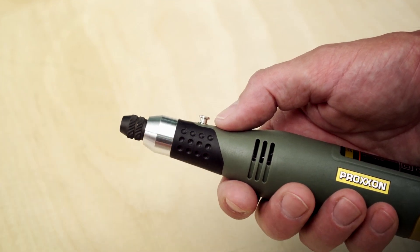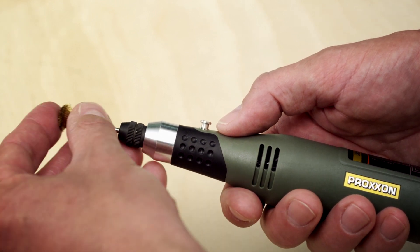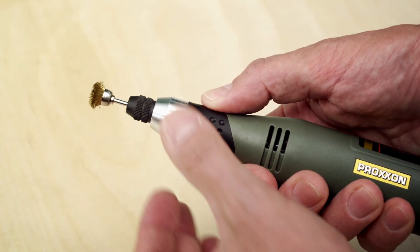The precision ball bearing mounted spindle can be locked at the push of a button, making it easy to exchange accessories.